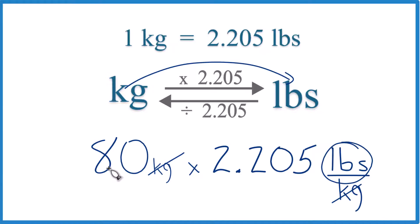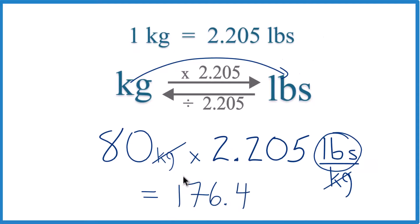So we're just multiplying 80 times 2.205 pounds. If we do that, we end up with 176.4. Since we went from kilograms to pounds, pounds is all that's left here. We're going to have 176.4 pounds, and that's equal to 80 kilograms.